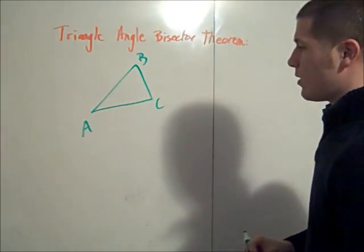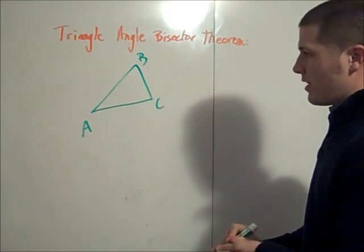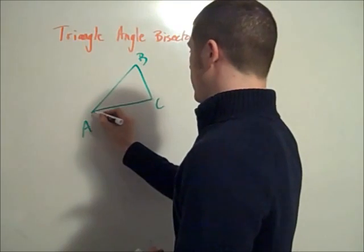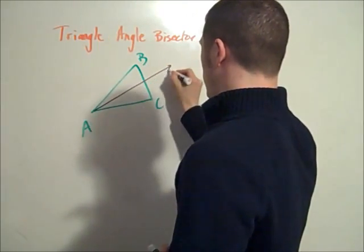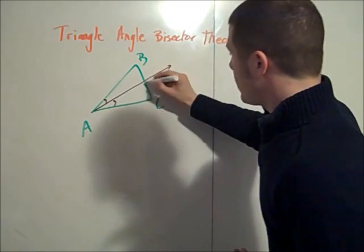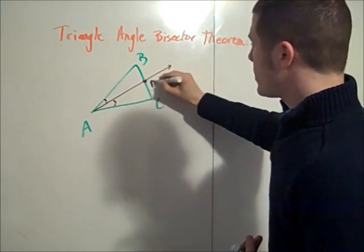And we consider one of the angle bisectors. So I'll draw in the angle bisector of A, and it intersects BC at this point D.